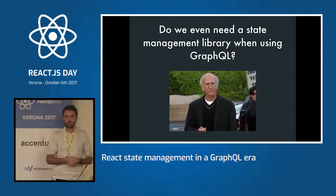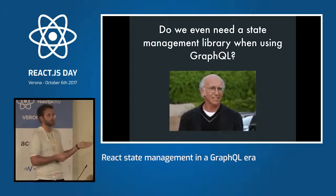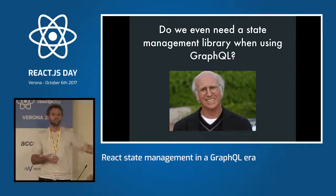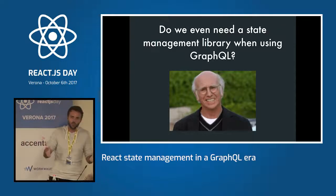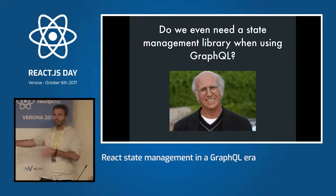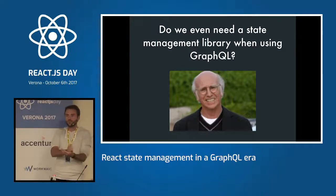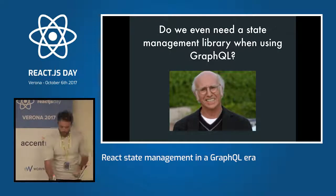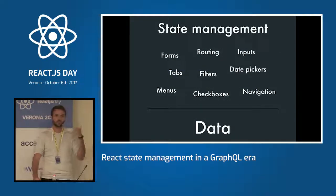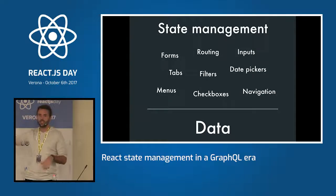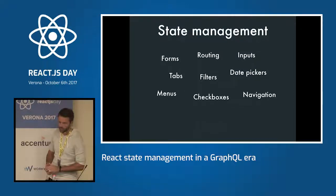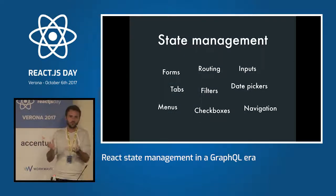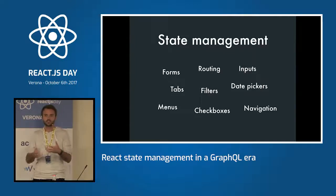So the question is: do we even need an external state management library when we're using GraphQL? My answer is maybe yes, maybe no — it really depends on context. Don't go home saying GraphQL is the best; if REST APIs work for you, you don't have to switch. But there are contexts where GraphQL with or without a state management library is a win for your team. Going back to that state management slide — we have all the small parts and the data. With GraphQL and Apollo, we just remove the data concern, and we're left with just the simple parts.